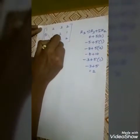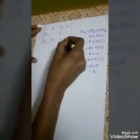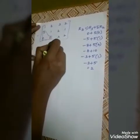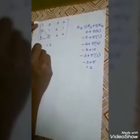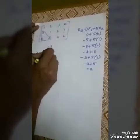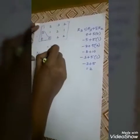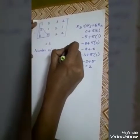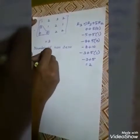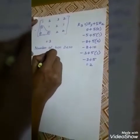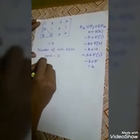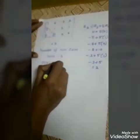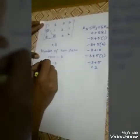How many non-zero rows are there? The number of non-zero rows is 3. Therefore, rank of A equals 3.